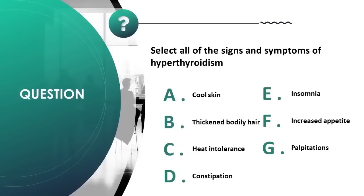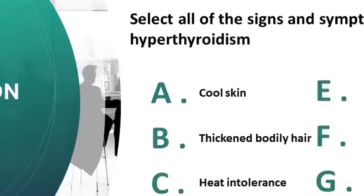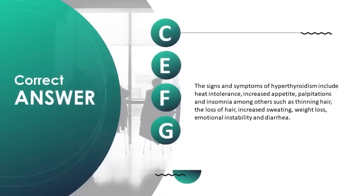Select all signs and symptoms of hypothyroidism: A) cool skin, B) thick and brittle hair, C) heat intolerance, D) constipation, E) insomnia, F) increased appetite, G) palpitations. Correct answer is C, E, F, G. Signs and symptoms of hypothyroidism include heat intolerance, increased appetite, palpitations, and insomnia, among others such as thinning hair, increased sweating, weight loss, emotional instability, and diarrhea.